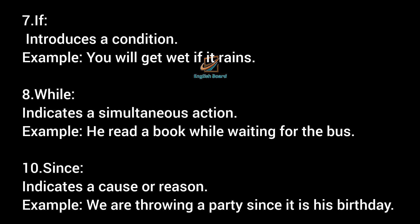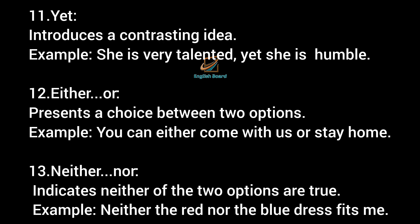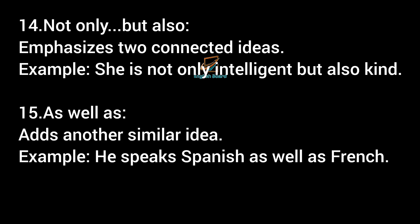'Yet' introduces a contrasting idea. Example: She is very talented yet she is humble. 'Either/or' presents a choice between two options. Example: You can either come with us or stay home. 'Neither/nor' indicates neither of the two options are true. Example: Neither the red nor the blue dress fits me. 'Not only/but also' emphasizes two connected ideas. Example: She is not only intelligent but also kind.